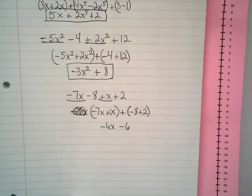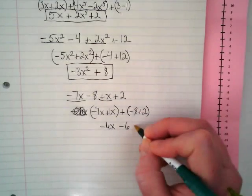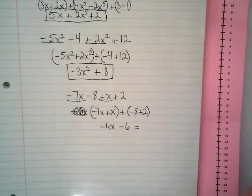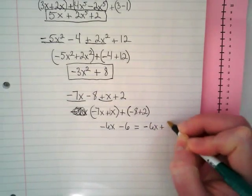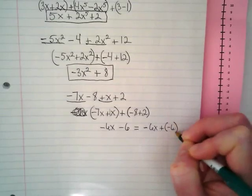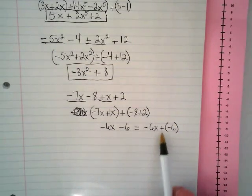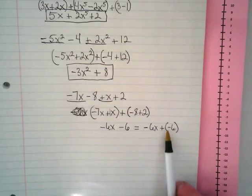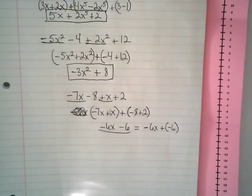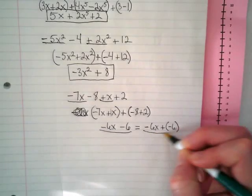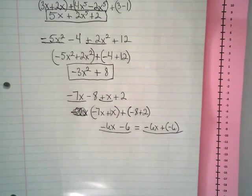Do you notice I left out the plus sign? There are two ways to write this: negative 6x plus negative 6, or the shortcut way — negative 6x minus 6. We never put a plus and a negative together without parentheses to separate them. The shortcut has less writing and we like shortcuts in math, but both mean the same thing.